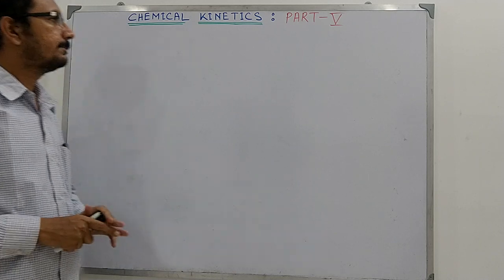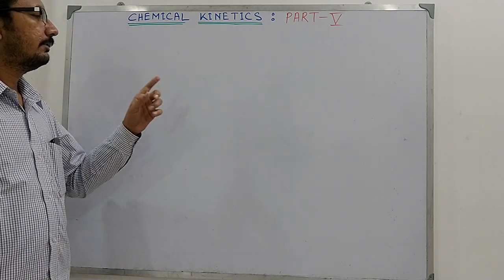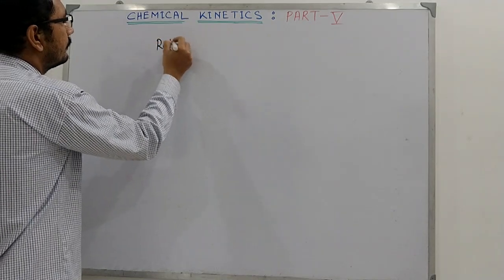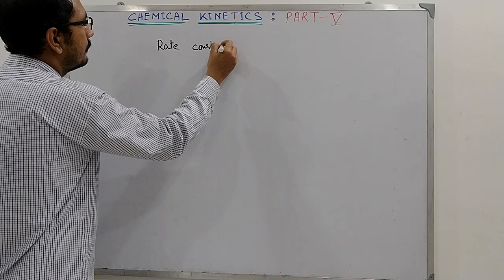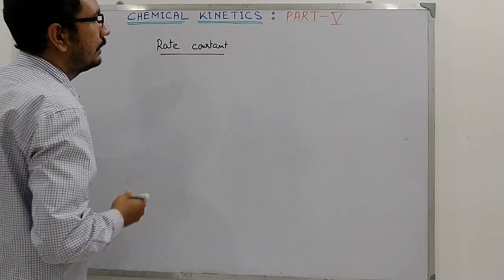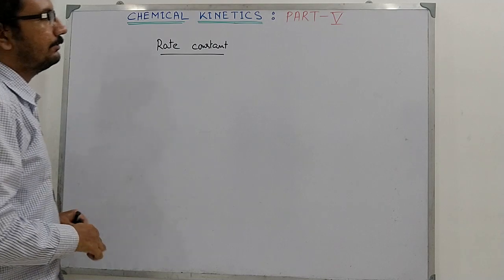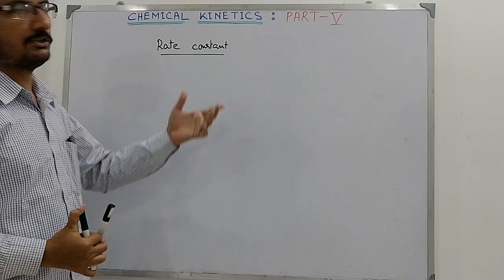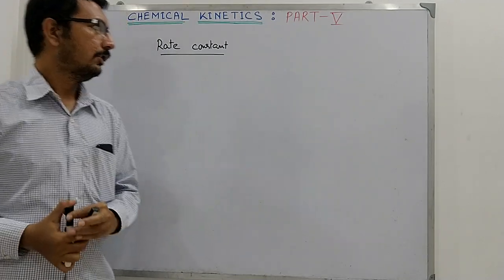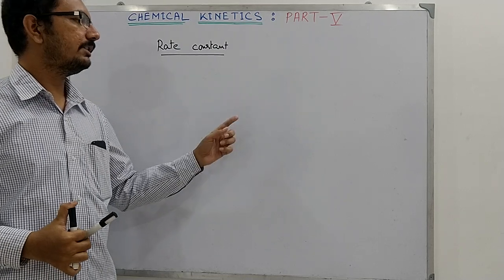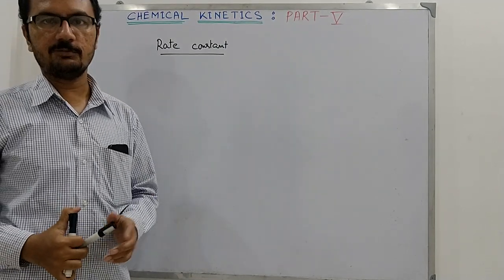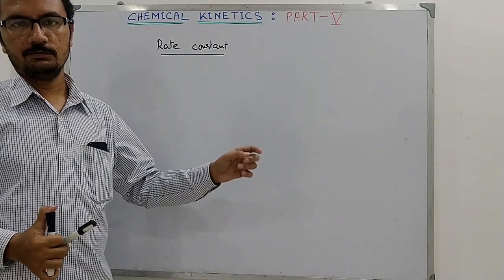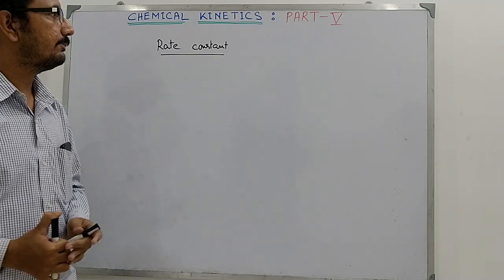In Part 5, I will discuss the topic of rate constant. In the previous part, I showed how the law of mass action helps us write the rate equation for a reaction. Though it has some limitations and may not match experimentally observed rate equations for multi-step reactions, the importance of the law of mass action is that it helps you write the rate equation for any reaction.